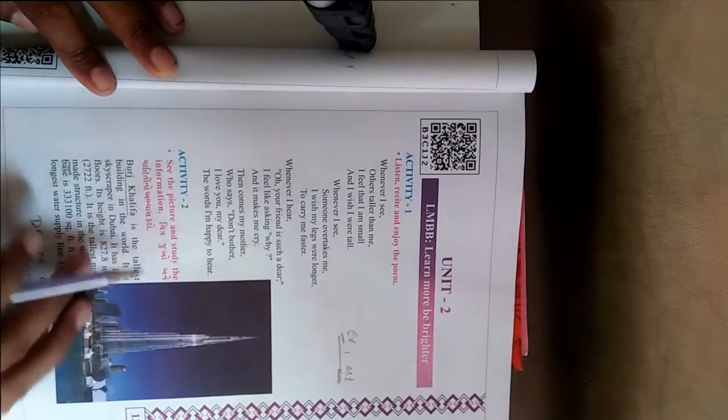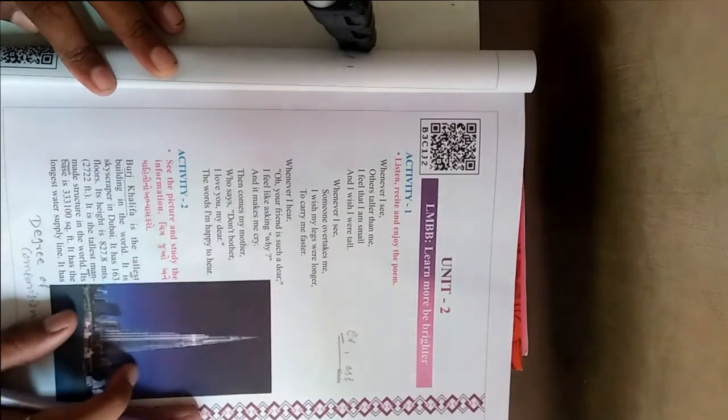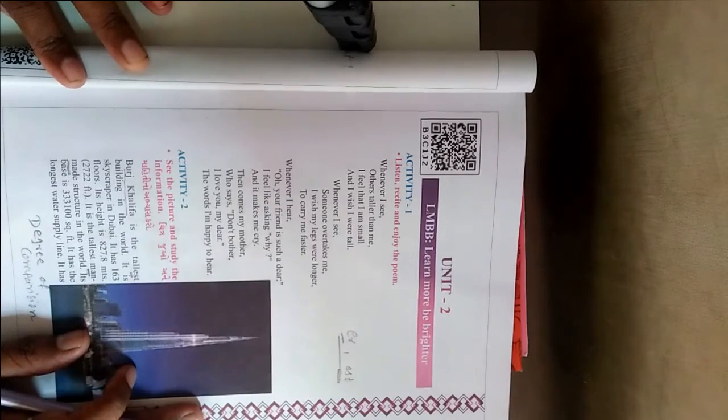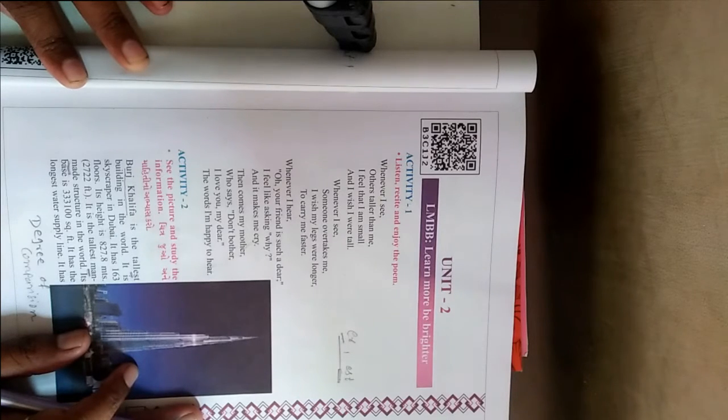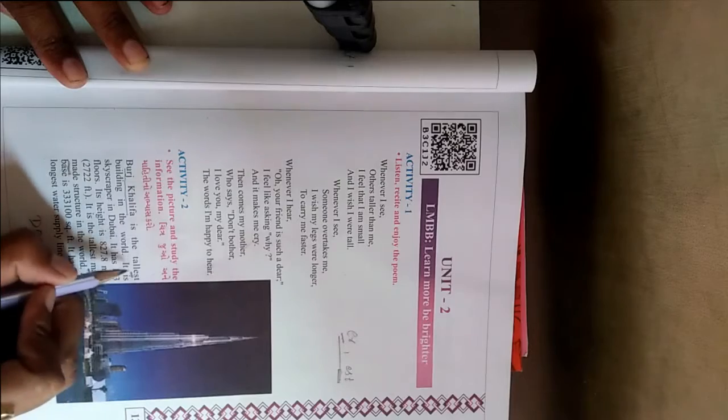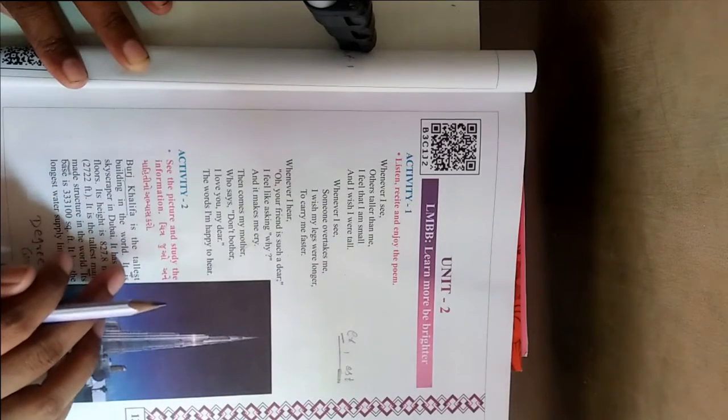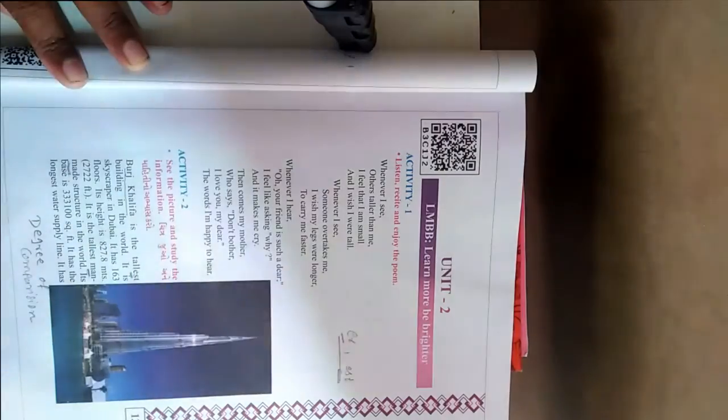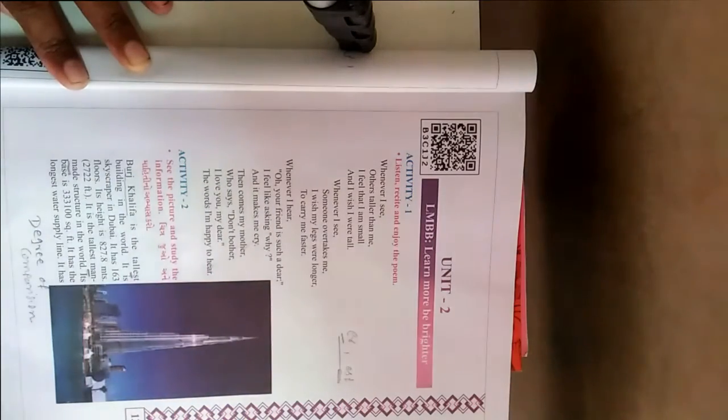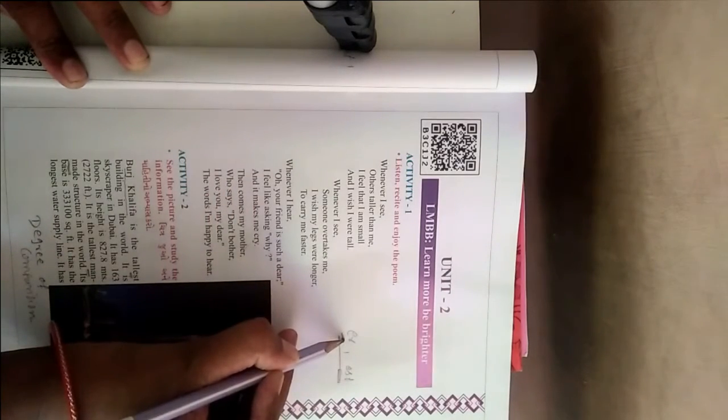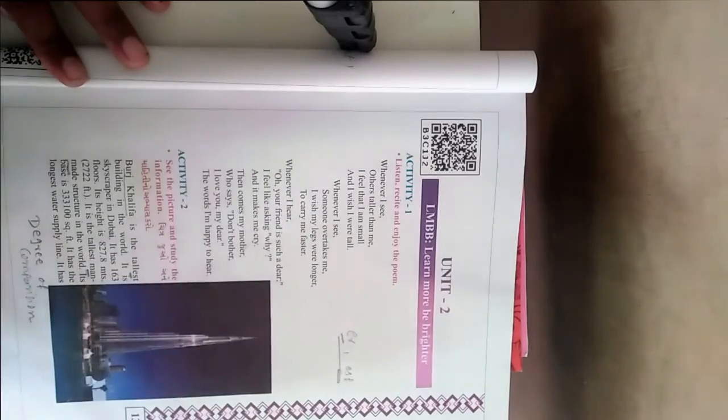Now Activity 2. See the picture and study the information. Here is a picture of Burj Khalifa and some information is given about it. We have to read it and there are some true false questions. So we have to fill it also. Now see what is written. Burj Khalifa is the tallest building in the world. There is a word tallest. This is a grammar point of your text like degree of comparison, which is related to the exam.